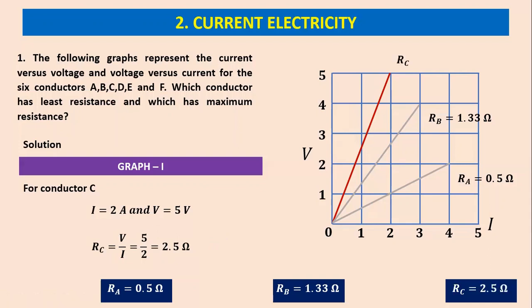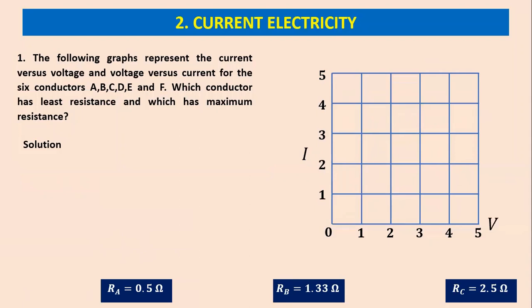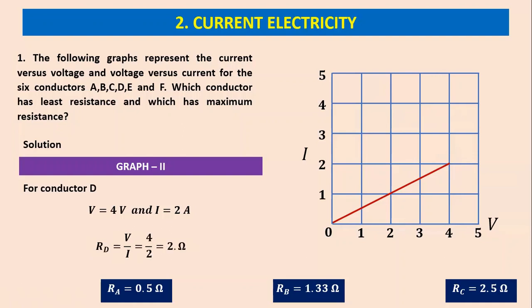Let us go now for the second graph. The second graph is current versus voltage. If you want to find the slope of this straight line, you have to take the reciprocal of the slope. Here the straight line meets a point (4, 2), so the voltage is 4 and the current is 2. For conductor D, R_D equals V by I, which is 4 by 2, equal to 2 ohms. This value falls in between R_B and R_C.